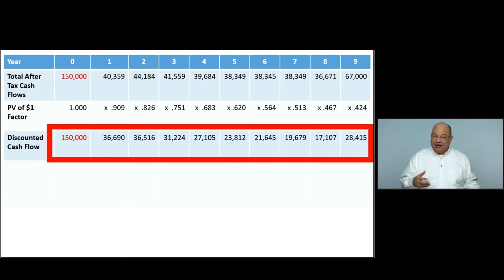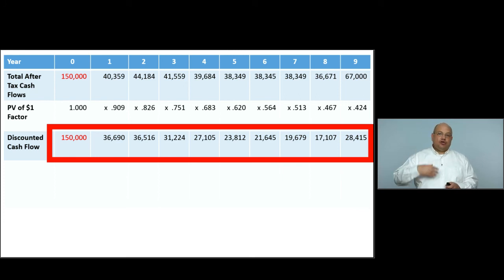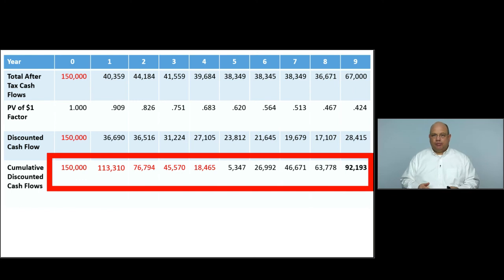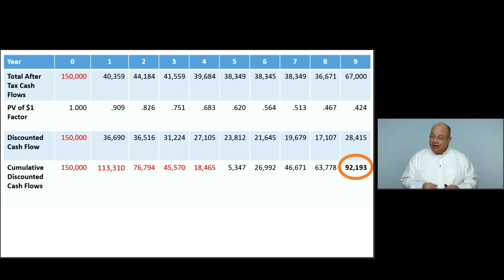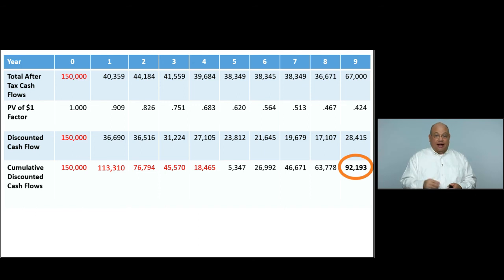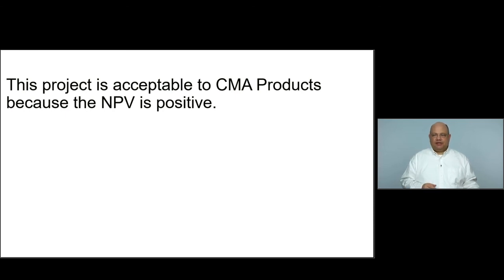Now we have the discounted cash flows — those net present value cash flows for each year. Next, we calculate the cumulative discounted cash flows. We saw this when we talked about the payback period — somewhere during year five it switches from a negative cumulative cash flow to a positive. Looking all the way out to year nine, if we add up all the discounted cash flows, the cumulative discounted cash flows at the end of year nine are $92,193 positive. That's the net present value of this project. The conclusion is that this project is acceptable to CMA Products because the net present value is positive.